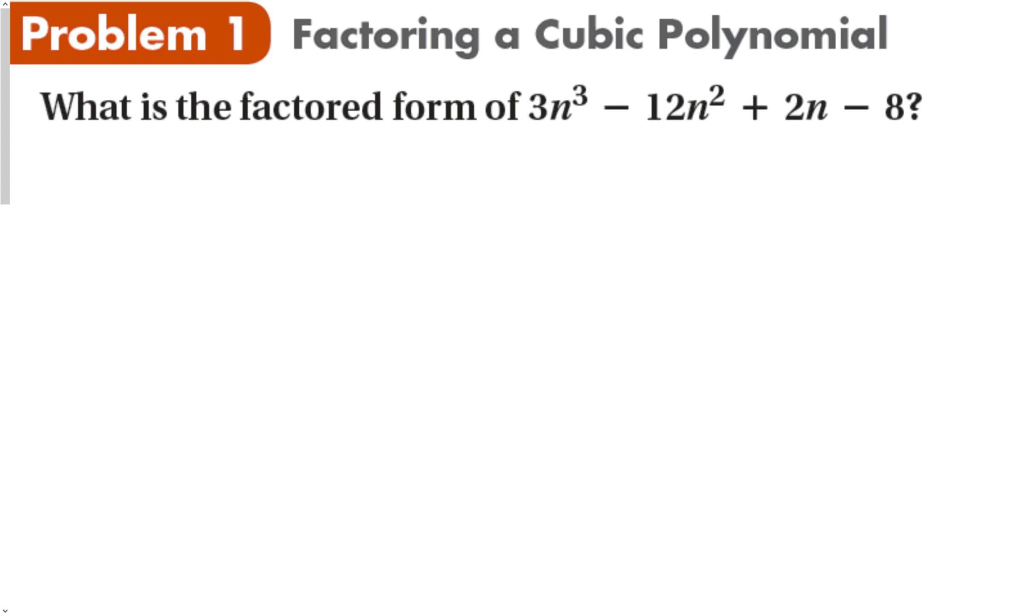So let's take a look at how this works. So to factor this cubic polynomial, 3n to the third minus 12n squared plus 2n minus 8. Now, there are ways that we could factor something with a cubic in it that doesn't require grouping, but it is much, much harder. So we're going to stick with this easy method right here.